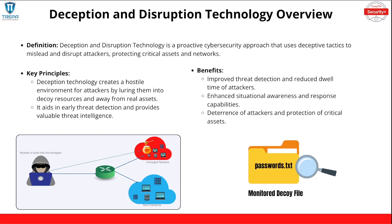Key principles: deception technology creates a hostile environment for attackers by luring them into decoy resources away from real assets. It aids in early threat detection and provides valuable threat intelligence. If you're confident enough to contain an attacker, you can create a behavioral baseline of that attacker and integrate that into your machine learning and proactive responses — like a SIEM or SOAR server with security orchestration, automation, and response. Benefits include improved threat detection, enhanced situational awareness, response capabilities, deterrence of attackers, and protection of critical assets.